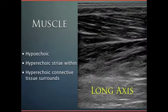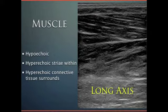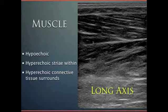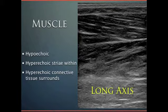Muscle is hypoechoic, and within the muscle itself we can see hyperechoic striae. In the long axis of the muscle, we can see these hyperechoic striae going across, and in between the different muscle bundles we can see hyperechoic connective tissue surrounding them. This separates one muscle bundle from the next, with hypoechoic connective tissue seen superiorly differentiating one muscle from another.